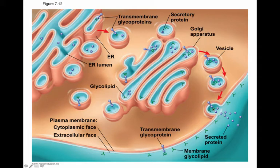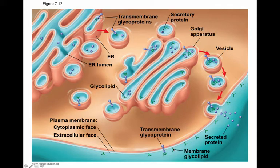The secretory proteins are secreted as they should be. The transmembrane glycoproteins go into the membrane and span both lipid bilayers. The transmembrane glycoprotein has been modified, so it has a glycan attached to it, and the glycolipids end up in the membrane as signaling molecules. Membrane lipids and proteins are synthesized in the ER.